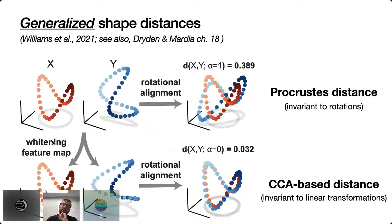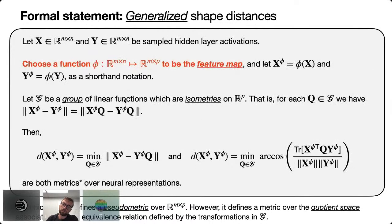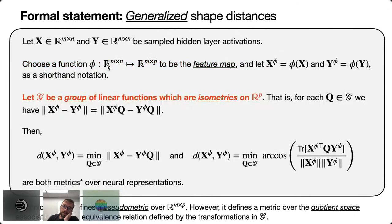The CCA-based distance says two neural representations are identical if you can find a linear transformation that aligns them — less stringent than Procrustes, which only allows rotational alignment. Both satisfy the triangle inequality. More formally, we start with matrices X and Y, allow a feature mapping phi (such as the whitening operation, or a non-linear function), and apply a set of alignment functions G. If the feature mapping brings both networks into a common dimensional space, this also handles networks with different numbers of neurons.